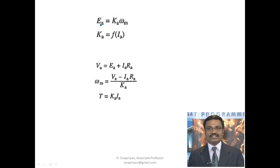The back EMF formula is: ea = Ka·ωm, where Ka is a function of ia, so ea is proportional to ia·ωm. The general formula is Va = ea + ia·Ra. Substituting ea = Ka·ωm and solving for ωm: ωm = (Va − ia·Ra) / Ka.